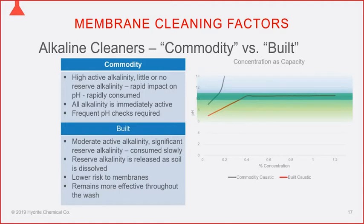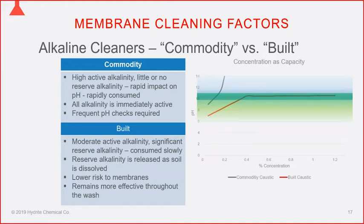With built products, you can add a lot more chemical to solution before exceeding pH 11. They have a lot more alkalinity — soil-absorbing capacity — without exceeding the upper pH limit. Once you hit your pH target using a built product, its buffering capacity means the pH won't drop much during mid-wash; it maintains the desired pH and cleaning capacity throughout the entire cleaning process. The operator doesn't have to check as often and can be assured the cleaning chemistry will carry through to the end of the wash.